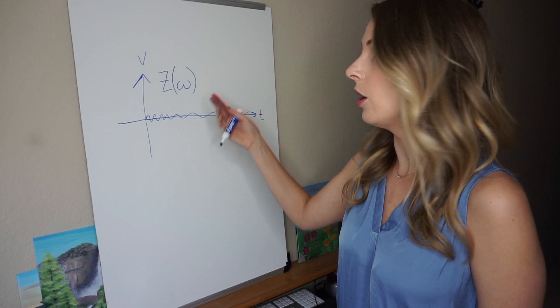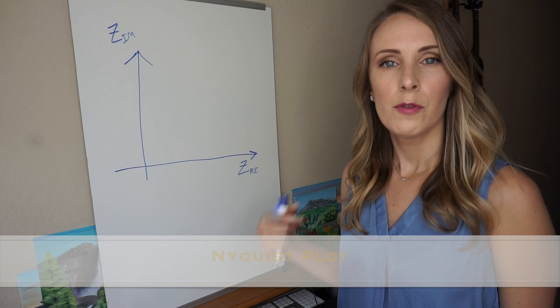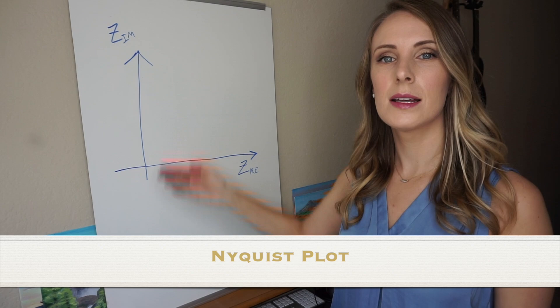So what we measure is the impedance z with respect to the frequency of the signal, which is omega. So we apply this to two batteries. First of all, here is our Nyquist plot.